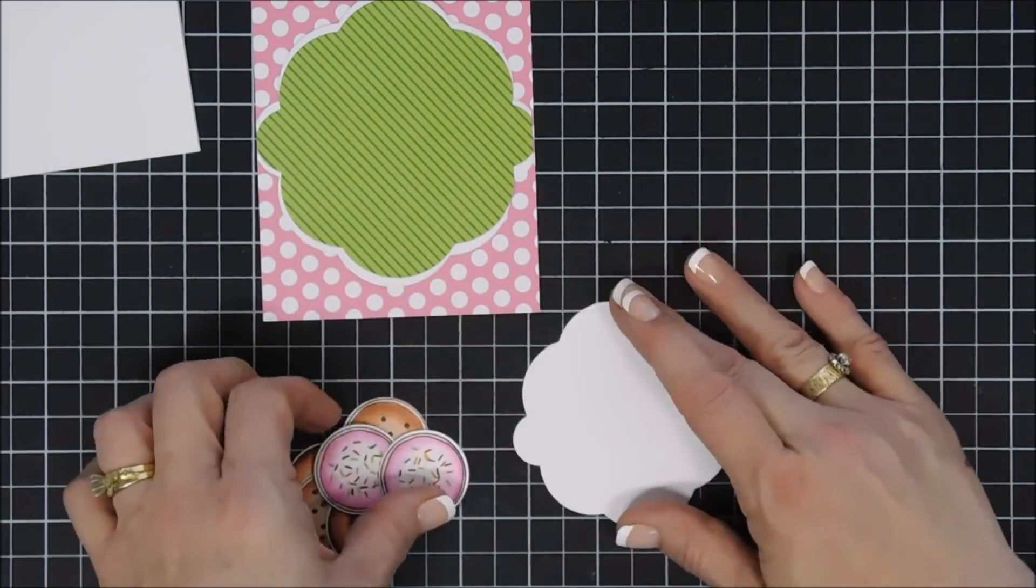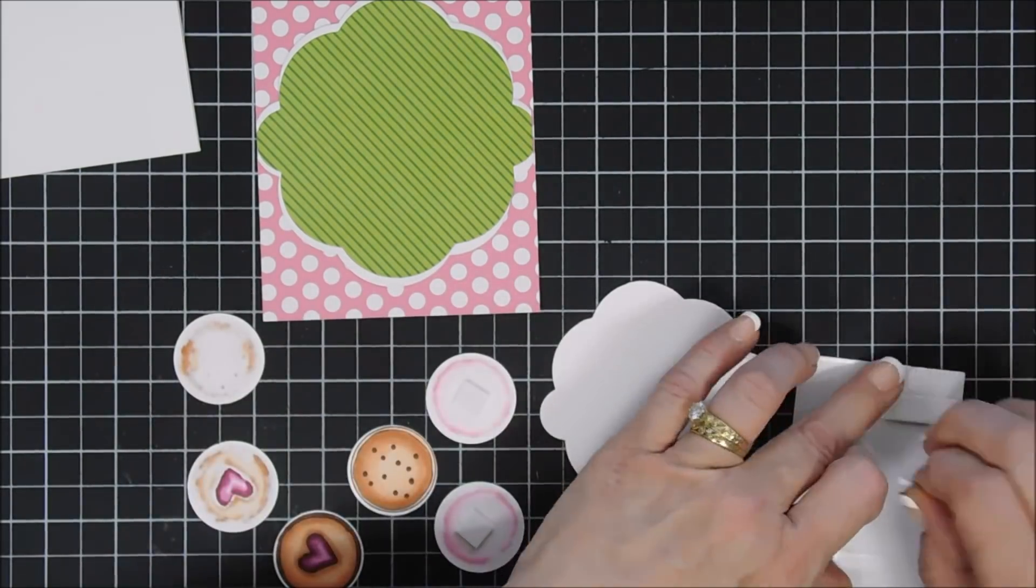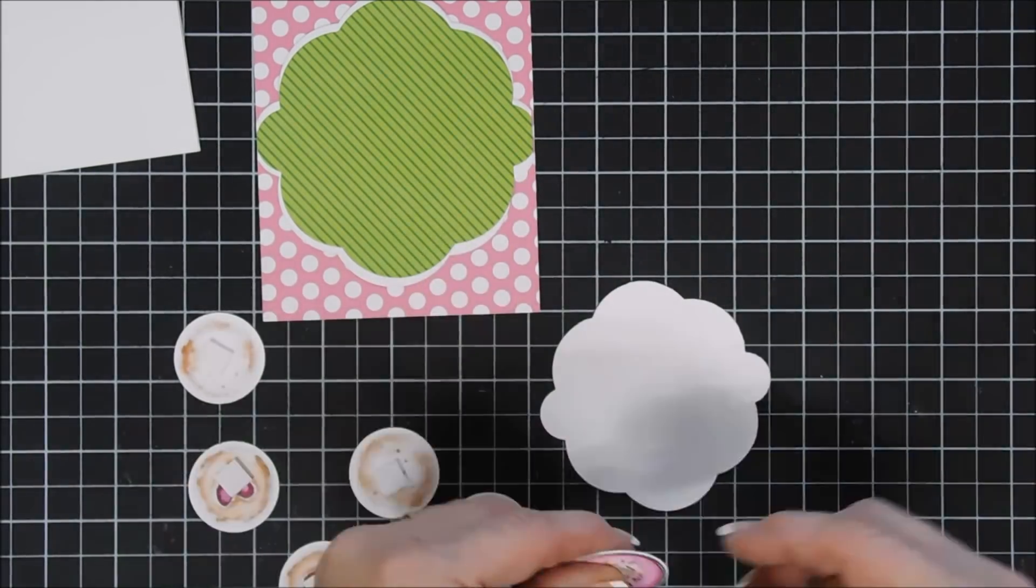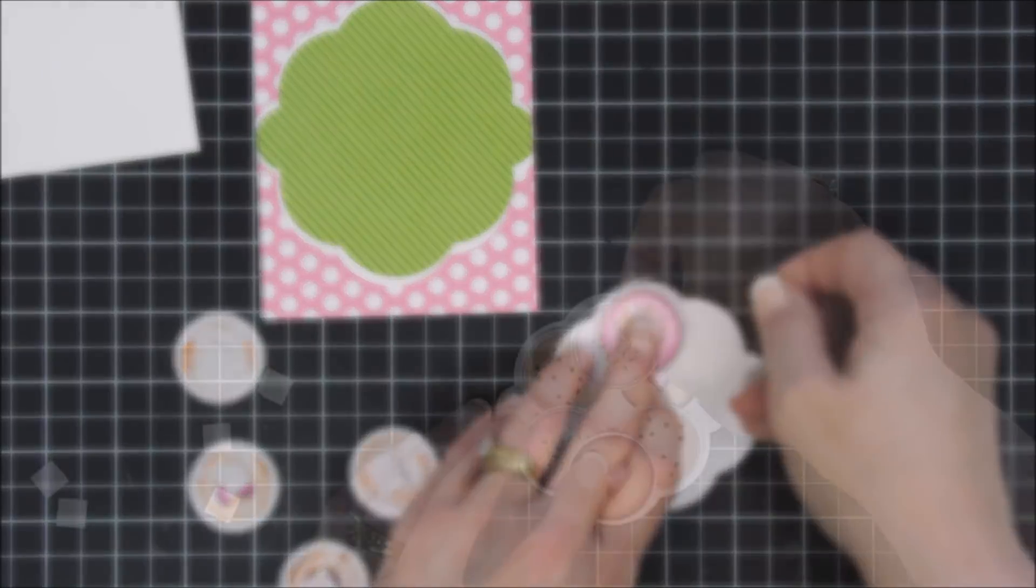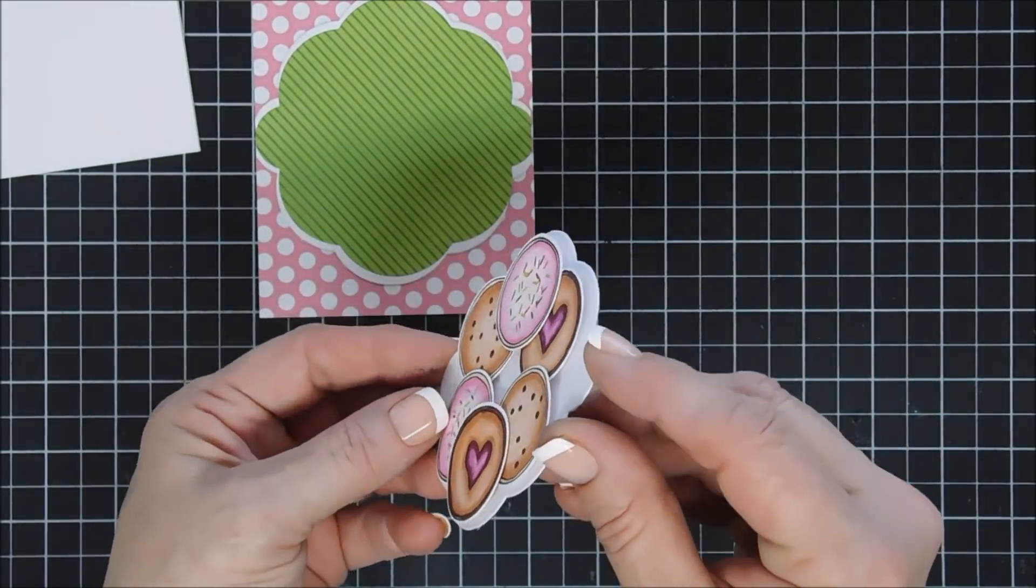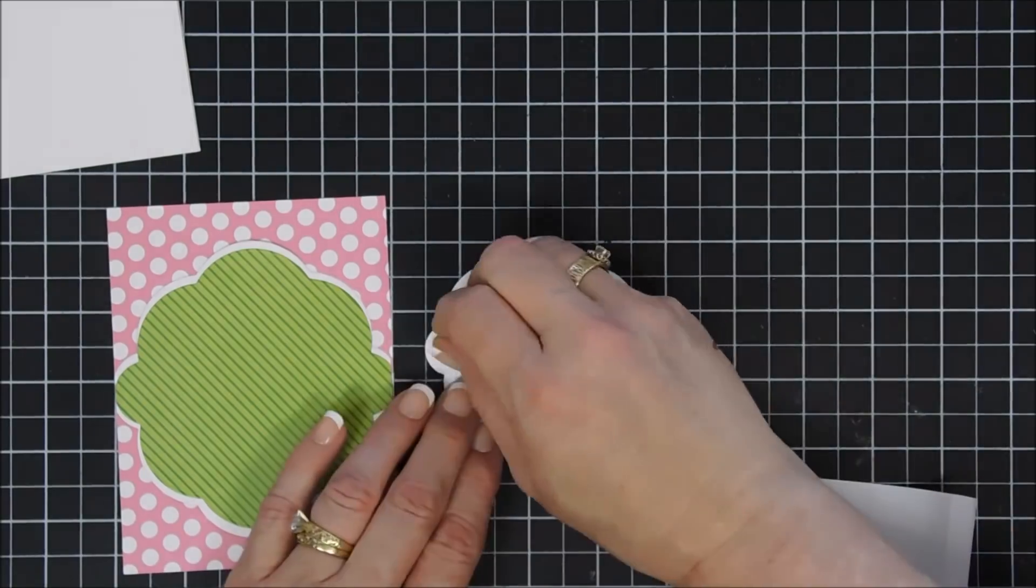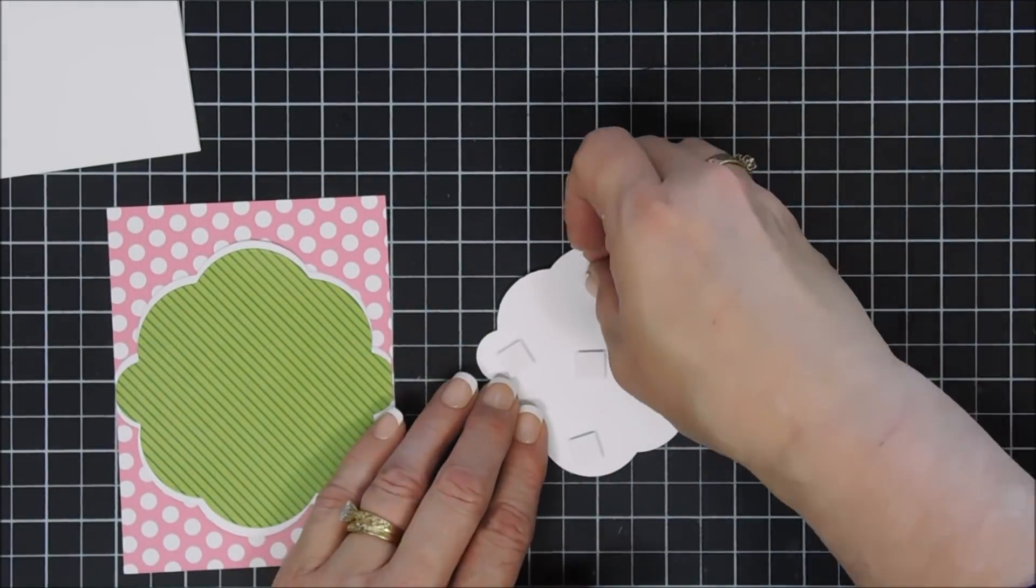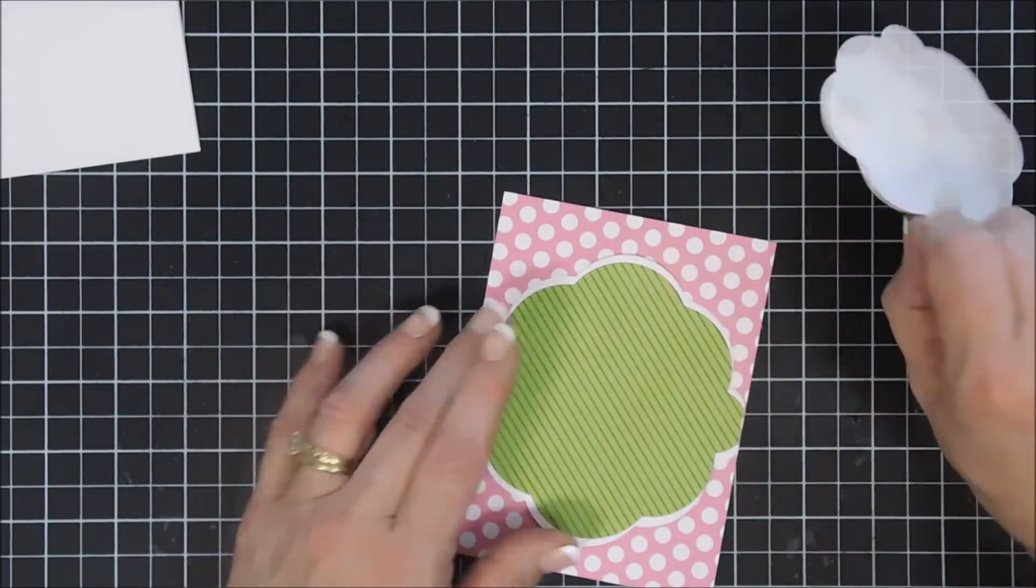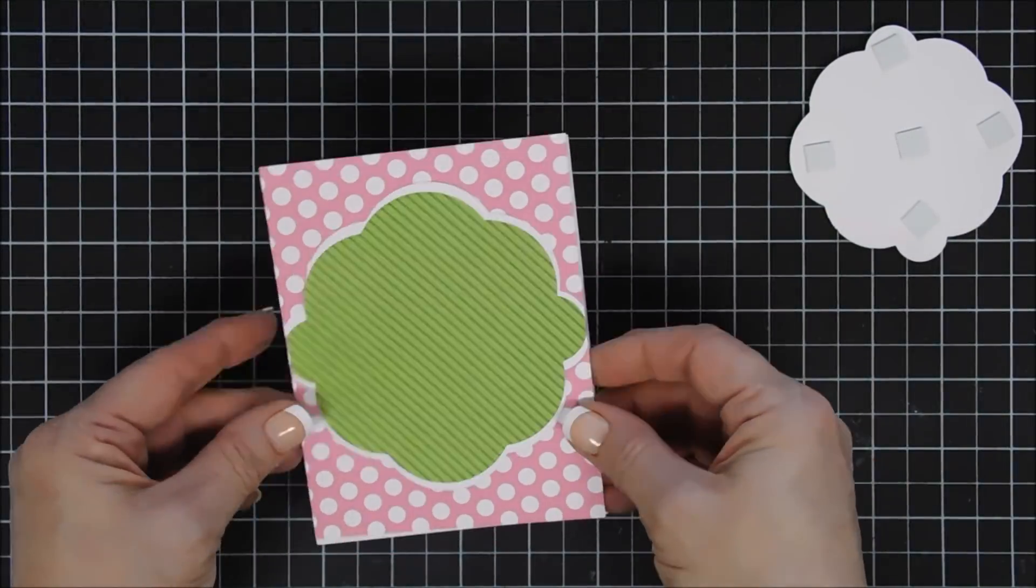Okay, I'm going to add some foam squares behind each one of my cookies, and then I'm just going to adhere them to my little white panel. Once they're all adhered, I think they look so cute. It kind of looks like a little plate, a little plate of cookies. I'm going to add some foam squares behind this panel, and then we're going to pop that up and place it in the center of our pattern paper here. Okay, using my tape runner, I'm going to go ahead and adhere that to my card base, which is a standard A2 size card base.